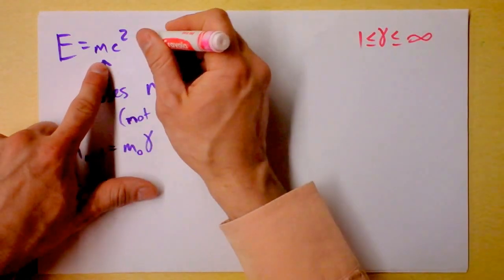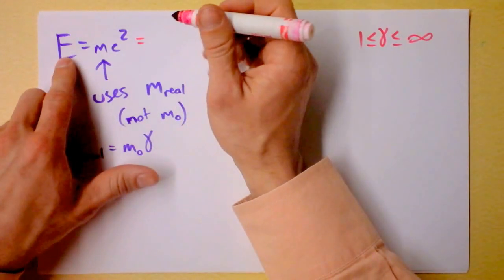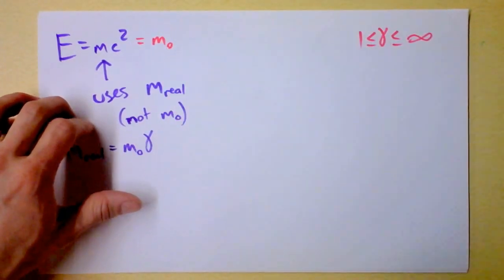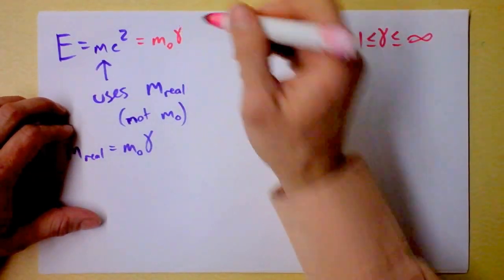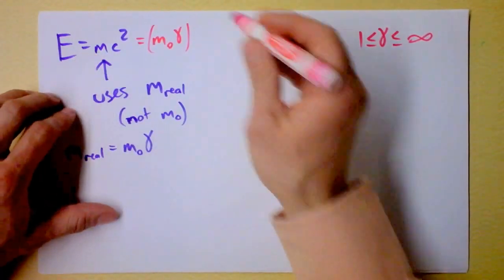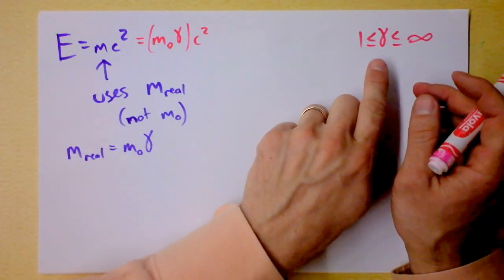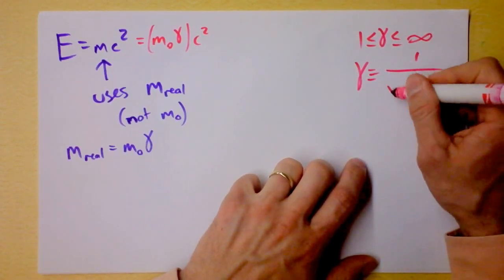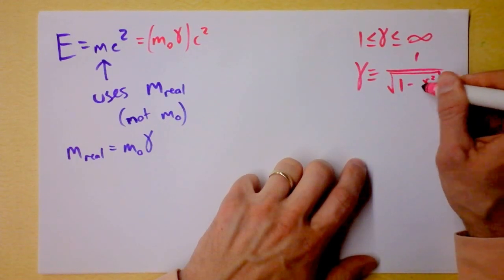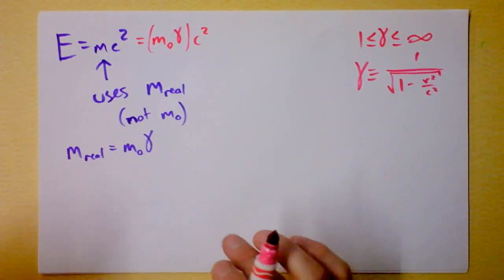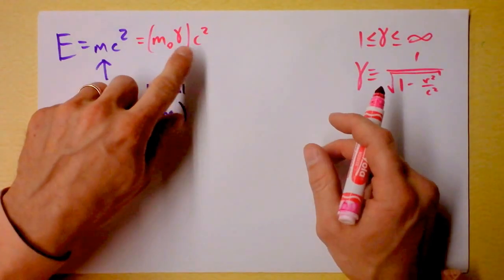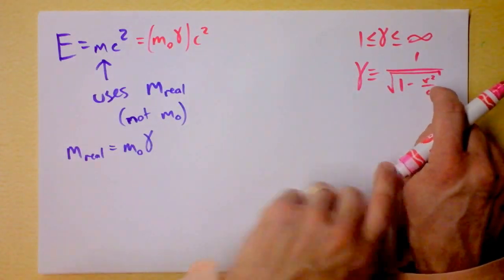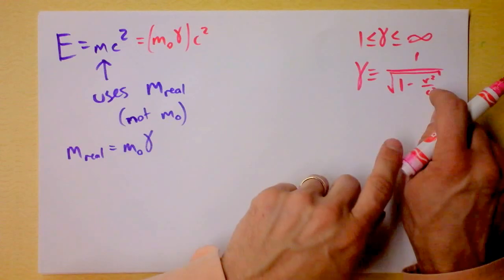This energy must be the rest mass of the particle times gamma times c-squared. So E = (m₀γ)c². Gamma is 1 over the square root of 1 minus v²/c², or 1 minus beta-squared. We're dividing m₀c² by this business, so energy gets very big when you're moving very quickly.